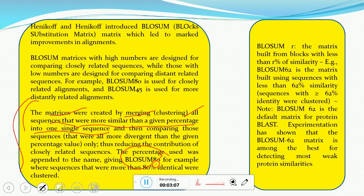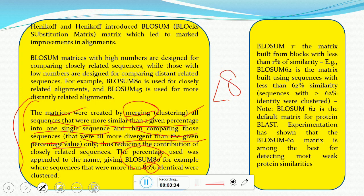If we are taking 80% as the criteria, we select all sequences showing more than 80% similarity, merge them, take them as a single sequence, and then compare those sequences that were more divergent than the given percentage value — meaning all remaining sequences showing less than 80% similarity. The percentage used was appended to the name, giving BLOSUM 80. For example, the sequences that were more than 80% identical were clustered.